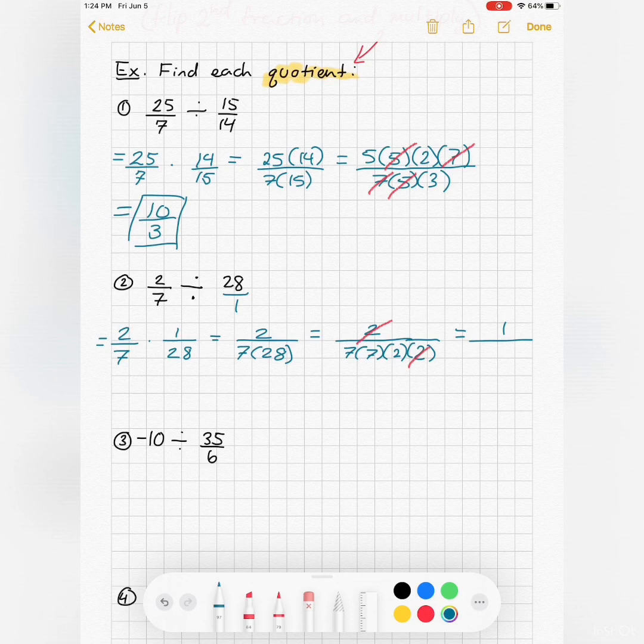So I'm just left with a 1 in the numerator over, what is that? 49 times 2, 49 times 2 is what? 98.